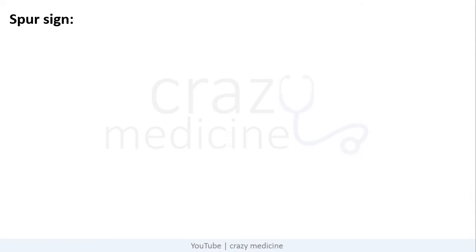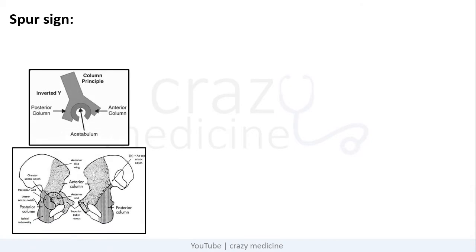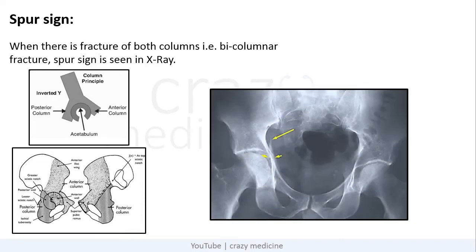First is the Spur sign. The acetabulum is composed of two columns — anterior and posterior. These columns represent the condensation of trabecular bone along the lines of stress. When there is a fracture of both columns, i.e., bicolumnar fracture, the Spur sign is seen on X-ray.